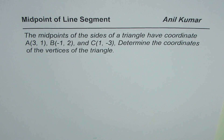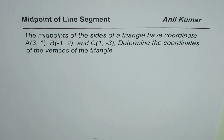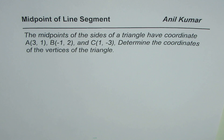I'm Anil Kumar and here is a question from my brilliant student Joseph on midpoint of line segments. The question is: the midpoints of the sides of a triangle have coordinates A(3,1), B(-1,2), and C(1,-3). Determine the coordinates of the vertices of the triangle. Joseph, this is indeed an excellent question and I hope the solution will help many of my viewers.